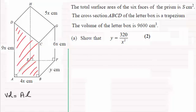And so for this question then, all we've got to do is work out the area of the cross section, times it by the length back which is y, and equate that to 9600, rearrange our equation, and we should find that we get y equals 320 over x squared. So that's where we're going with this.